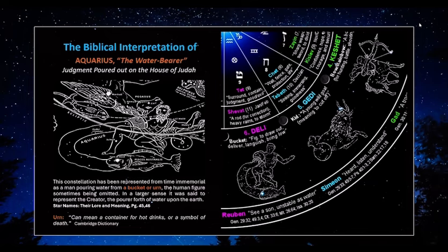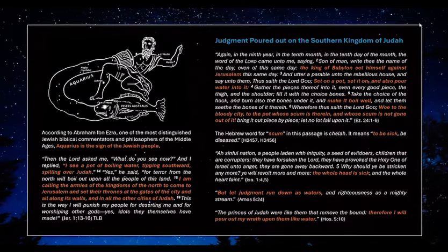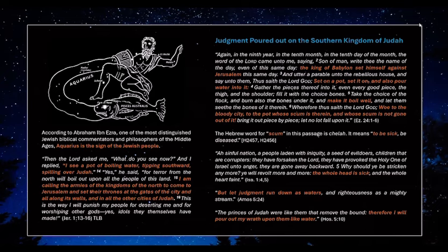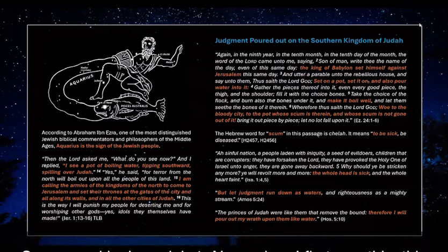Now we've got all the key elements. The main thing we're looking at is the significance of this water bucket or urn pouring out water on this southern fish. According to Abraham Ibn Ezra, one of the most distinguished Jewish biblical commentators and philosophers of the Middle Ages, he says Aquarius is the sign of the Jewish people — because this is the southern fish corresponding to the southern kingdom of Judah, and this water being poured out on Judah.